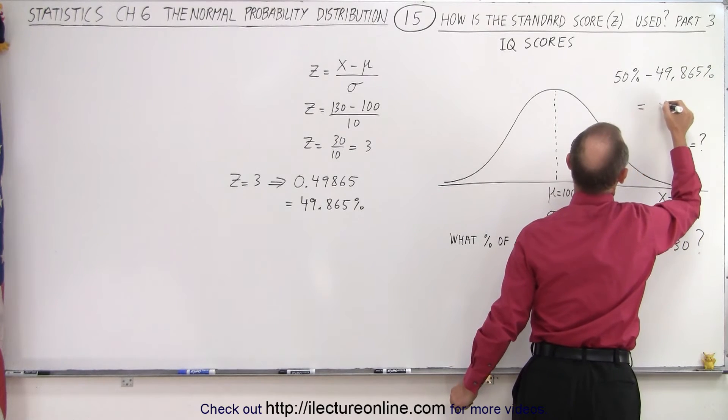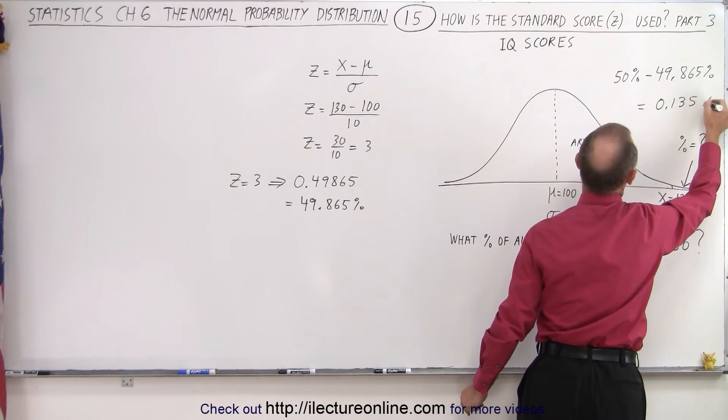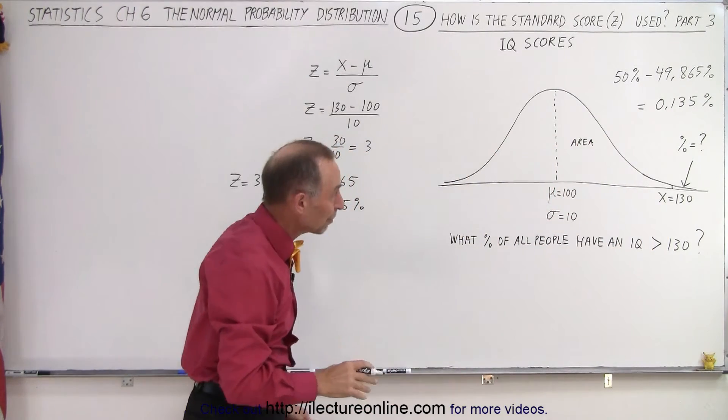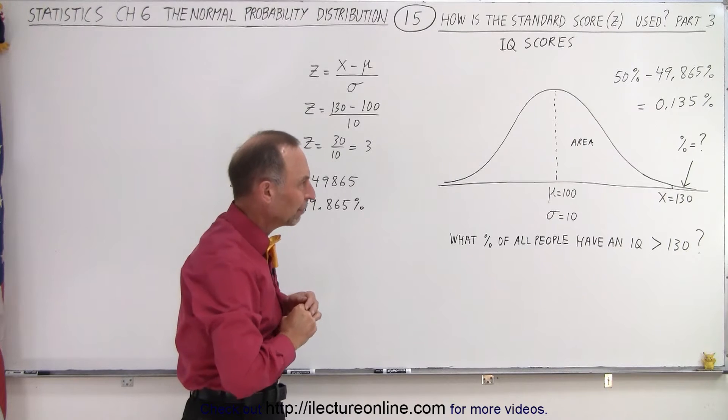And of course, that will equal 0.135%. So a little bit more than 1 tenth of 1% of all people have an IQ of 130 or above.